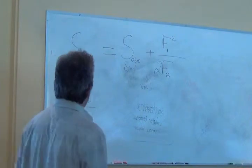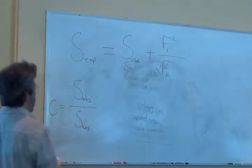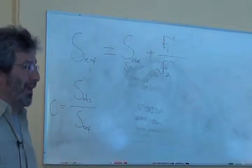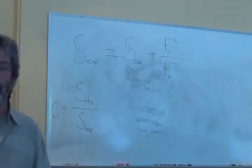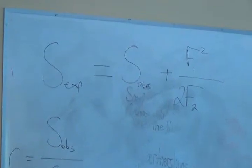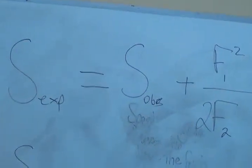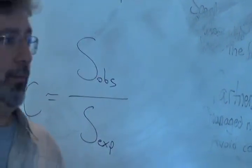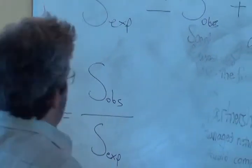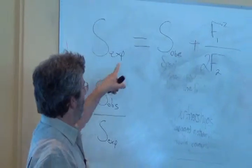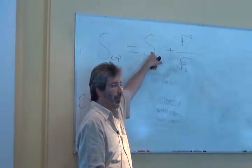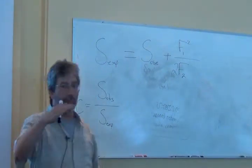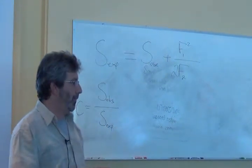We're going to call that C for completeness. It's really simple — it's what proportion of the likely set of species at our site have we detected and documented. We can measure C for any set of data for which we can use these inventory statistics. All we need is the number of species documented at any point in the inventory and the estimate of how many species there really are. It's just the proportion.